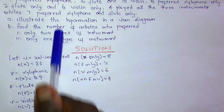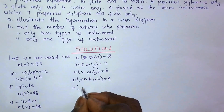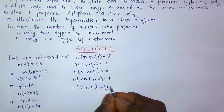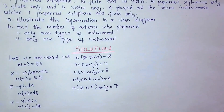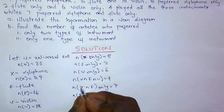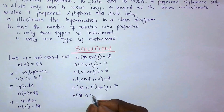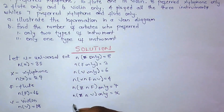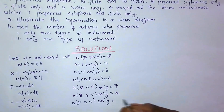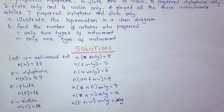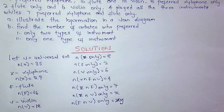There are 2 things we don't know yet: the number of xylophone intersection V only — we can let that be x — and the number of flute intersection V only — we can let that be y. From here, we can go ahead to draw the Venn diagram, and that's the A part of the question.